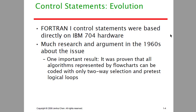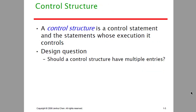In Fortran 1 language, control statements were based directly on the IBM 704 hardware. We can control algorithms and flowcharts in our control flow with only two-way selection and pre-test logical loops. A control structure is a control statement and the statements whose execution it controls.